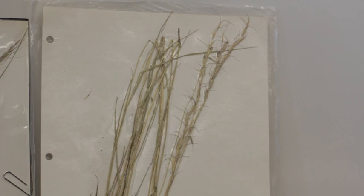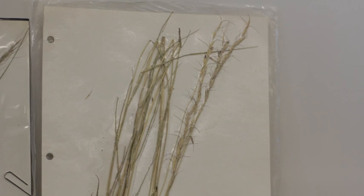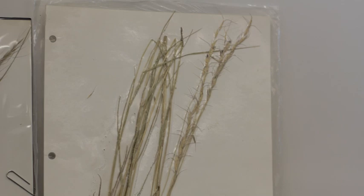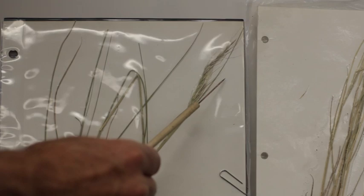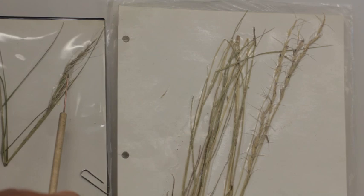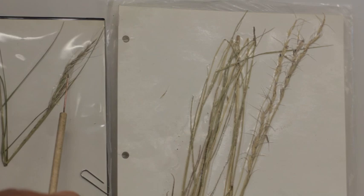One of the mistakes they typically make is calling green needle grass blue bunch wheat grass or blue bunch wheat grass green needle grass. So green needle grass has one floret per spikelet and has a twice bent awn. Blue bunch wheat grass has a spike inflorescence. In other words, these spikelets are attached to the main stem.